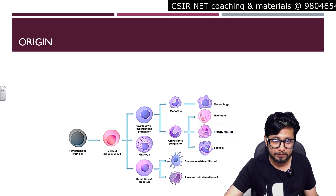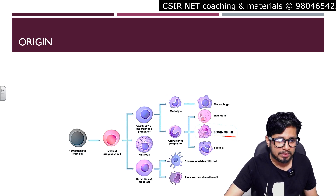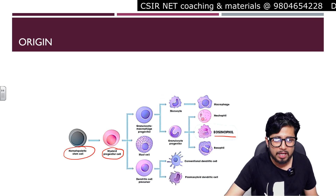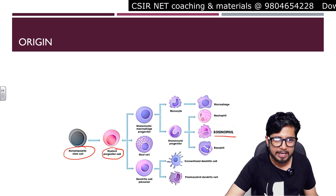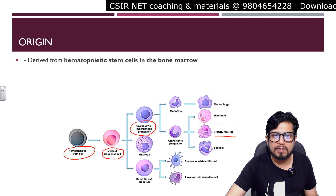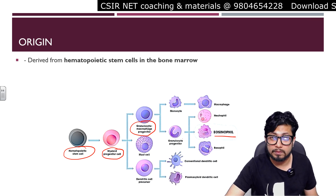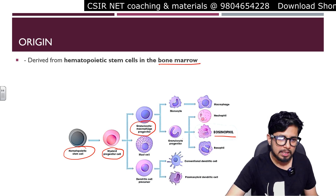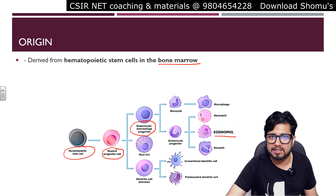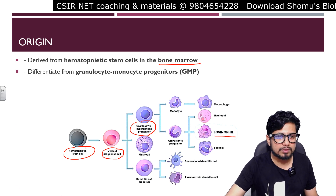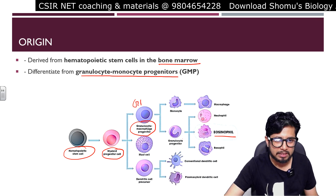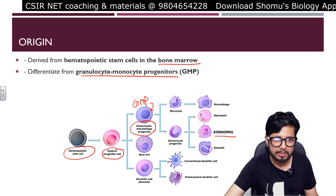You can clearly see how exactly the eosinophil gets originated. Starting from the hematopoietic stem cell, then there is a myeloid progenitor cell, and among the myeloid progenitor cells there is the granulocyte-monocyte progenitor cell. The overall development and growth of eosinophils is done in the bone marrow, because the whole process of hematopoiesis or blood cell development occurs inside the bone marrow. They are produced from granulocyte-monocyte progenitors, or GMP progenitors.